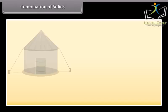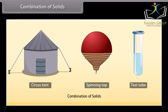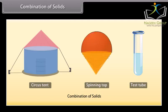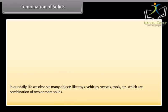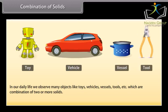Combination of solids: Students, look at these solids. These solids are made up of two or more solids. A circus tent is a combination of a cone and a cylinder. A spinning top is a combination of a hemisphere and a cone. And the test tube is a combination of a hemisphere and a cylinder. In our daily life we observe many objects like toys, vehicles, vessels, tools, etc., which are a combination of two or more solids. Let's learn to find their surface areas and volumes.